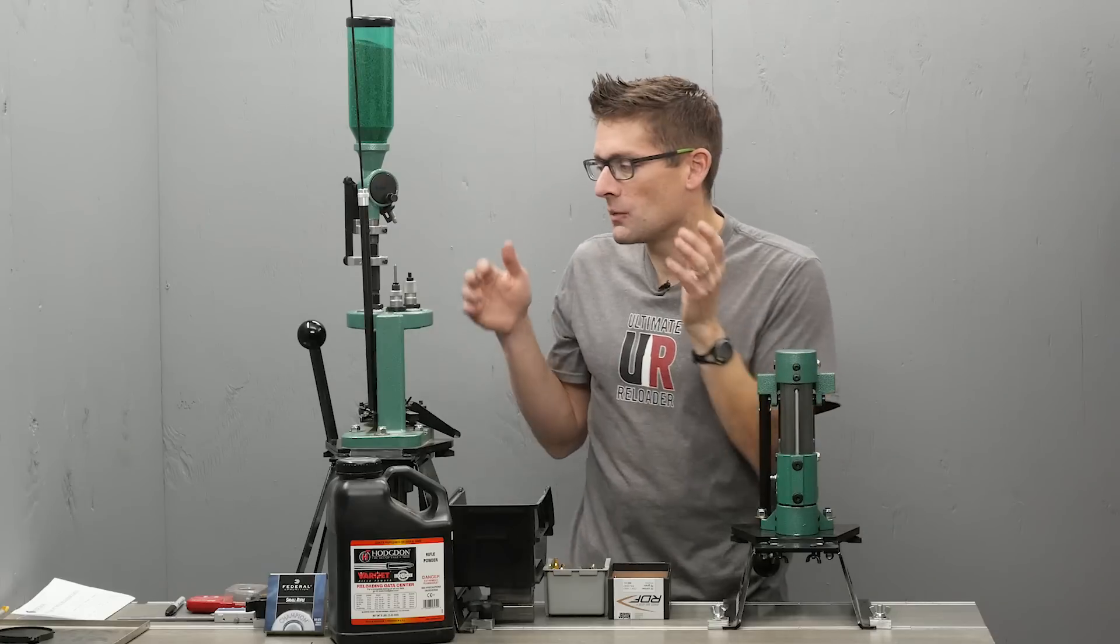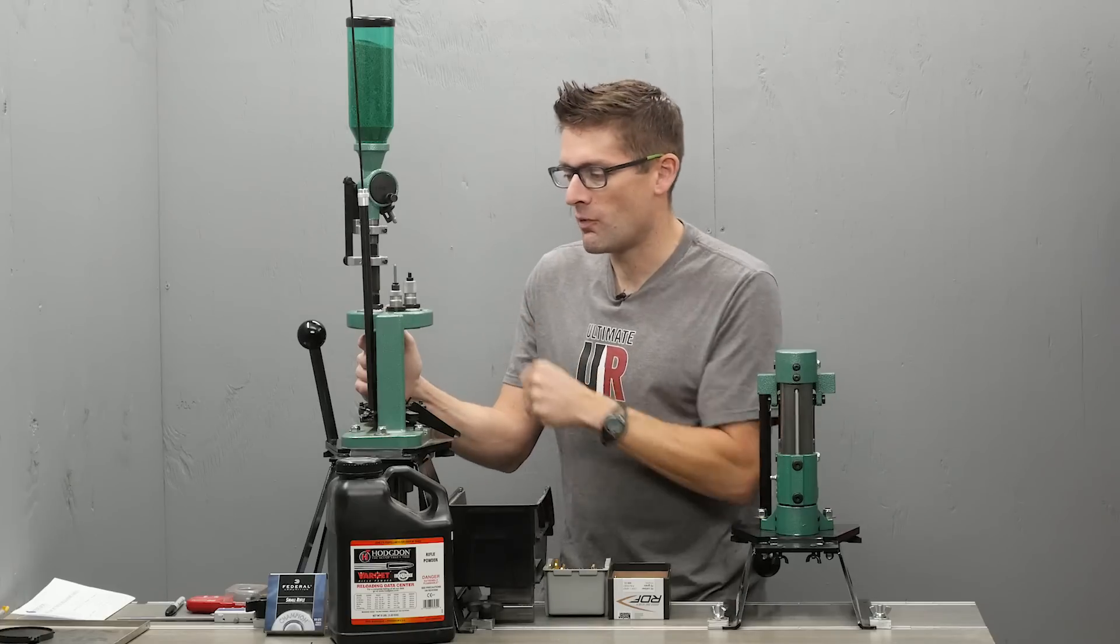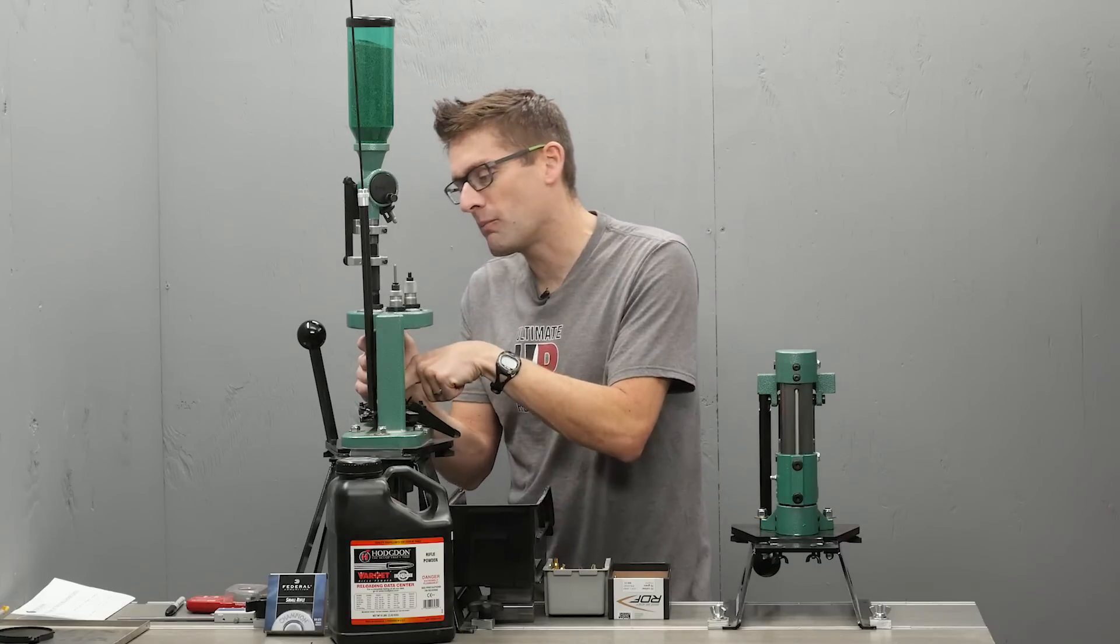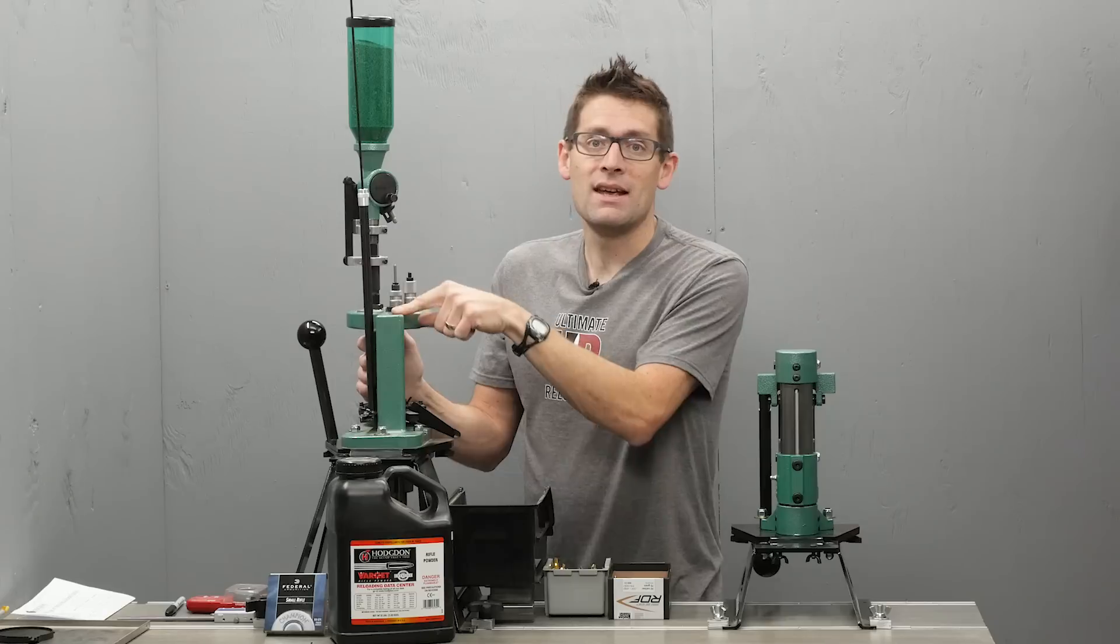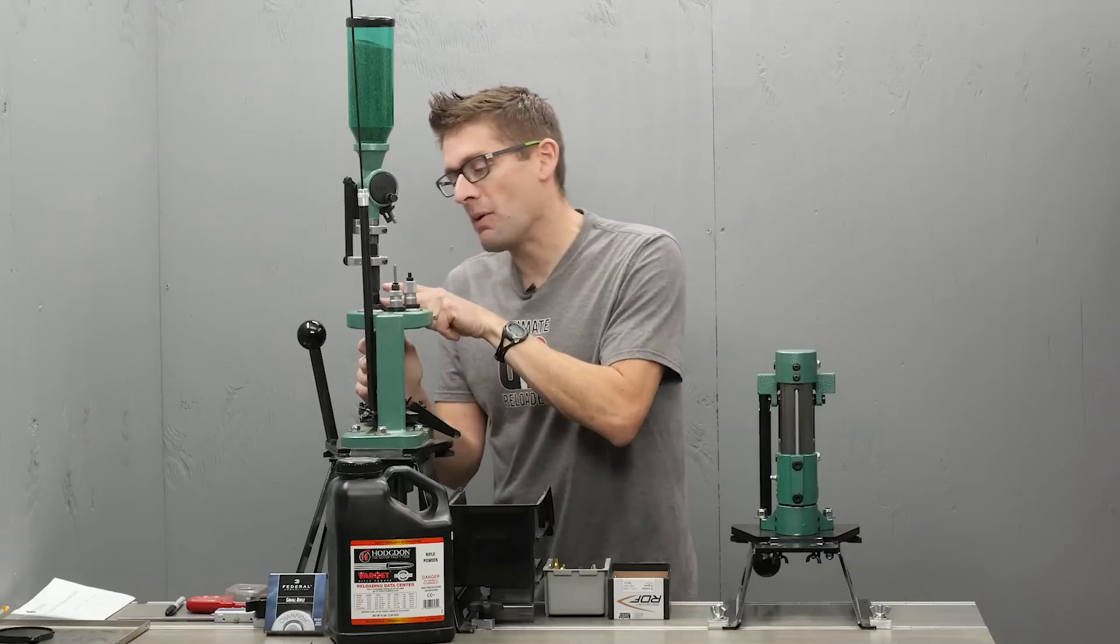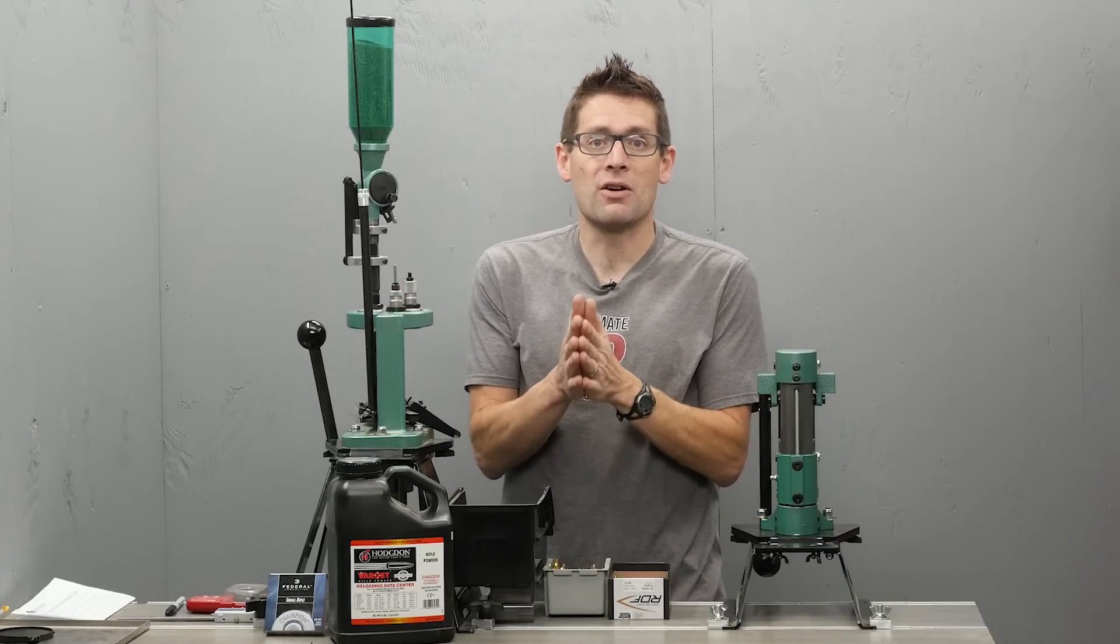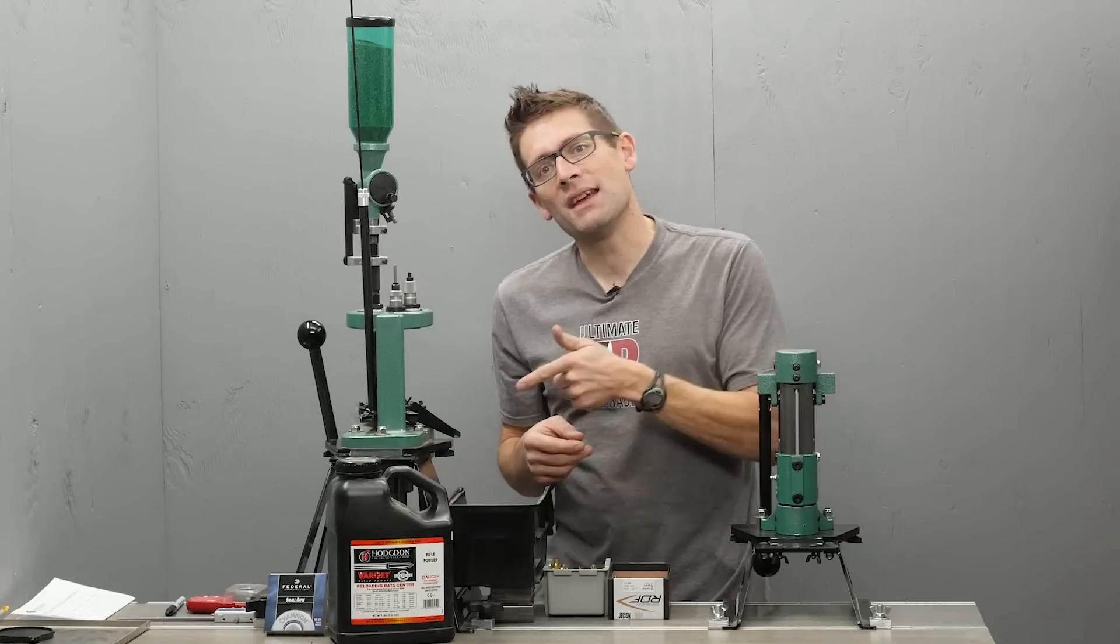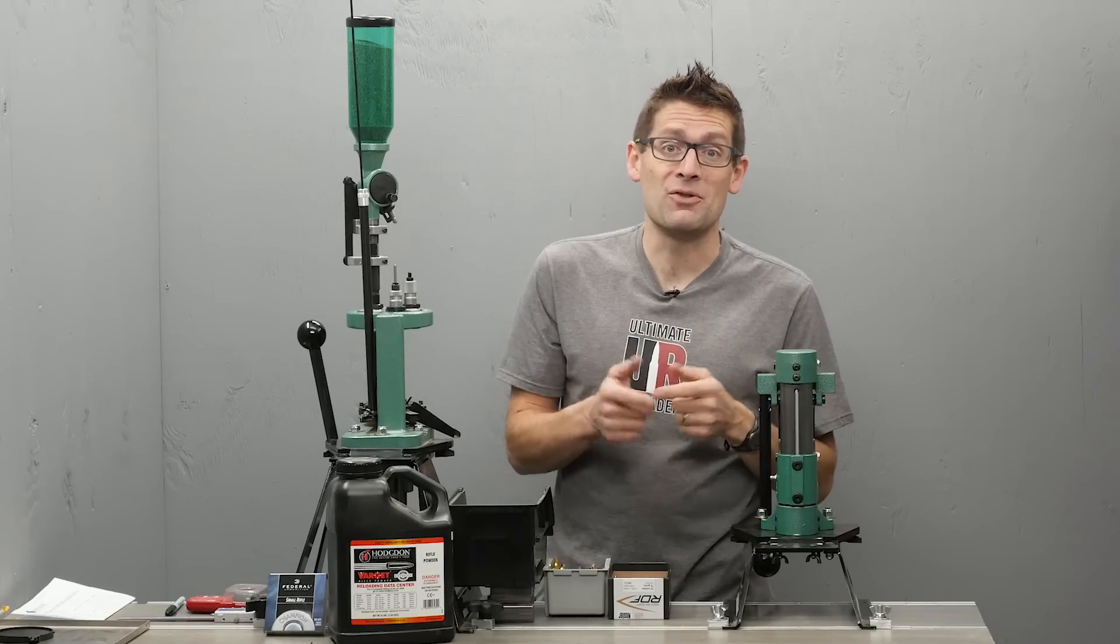Clean the brass and then run it through the progressive and we can use an expander ball here to uniform the case mouth in case anything happened while it was being cleaned. We prime on the press. The Pro Chucker 7 and Pro Chucker 5 have a really nice priming system with a really good feel. Probably best in class, I would say. We charge with powder and we seat the bullets. It's going to save us a lot of time and the results are going to be perfectly within the window of my specifications. So let's get to the press. Let me show you how I have this set up. Let me show you how fast we can load 224 Valkyrie.